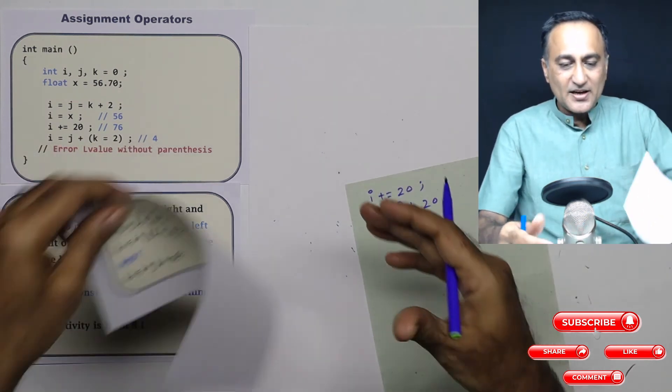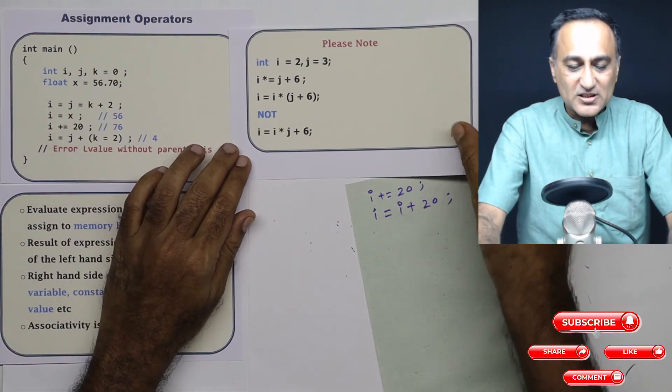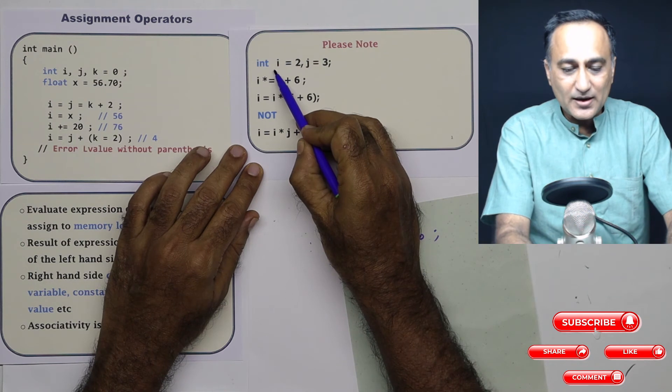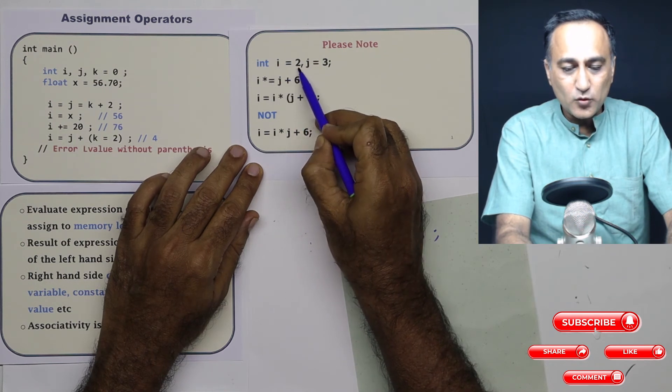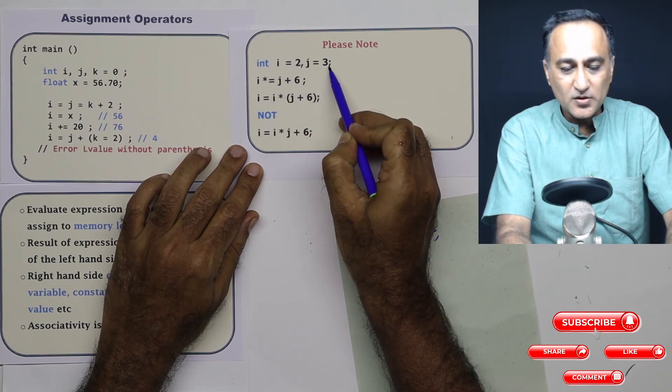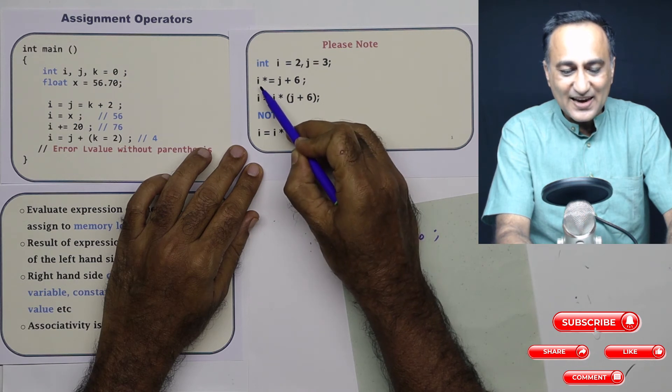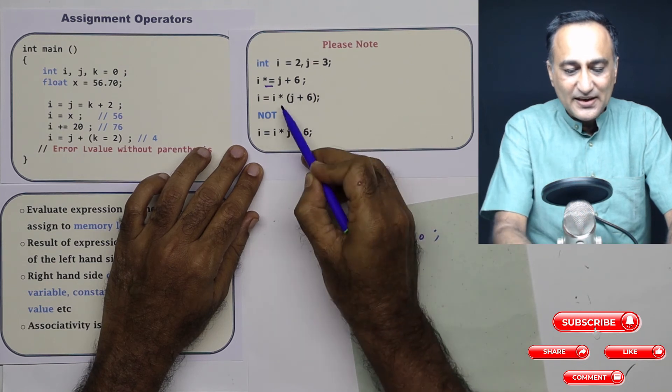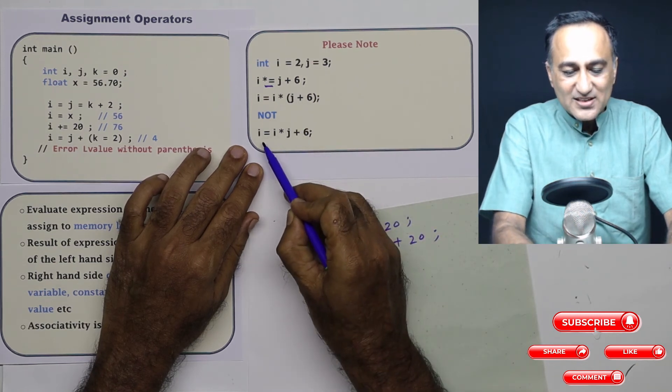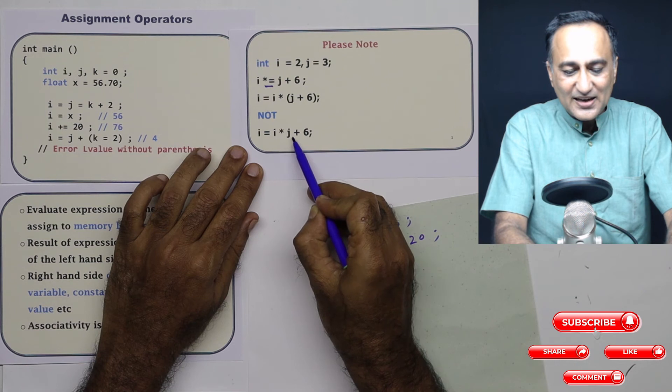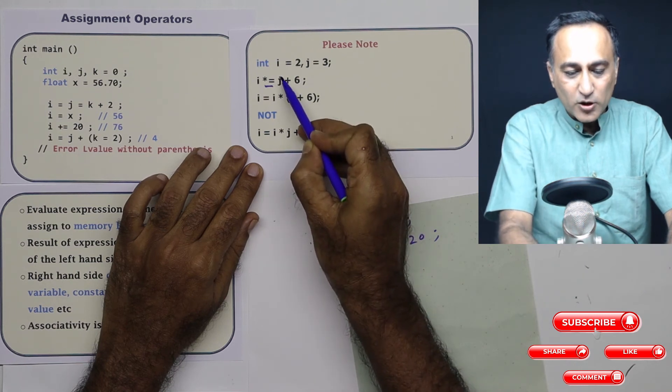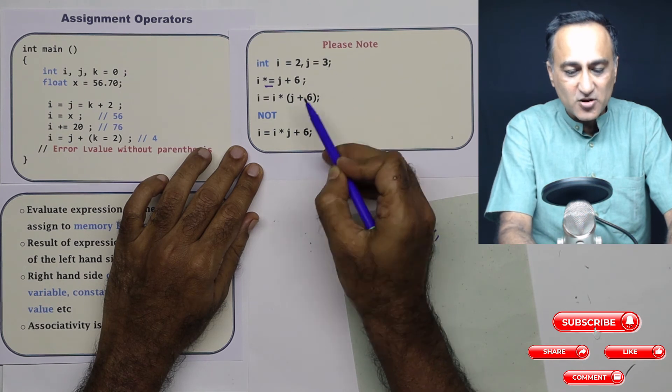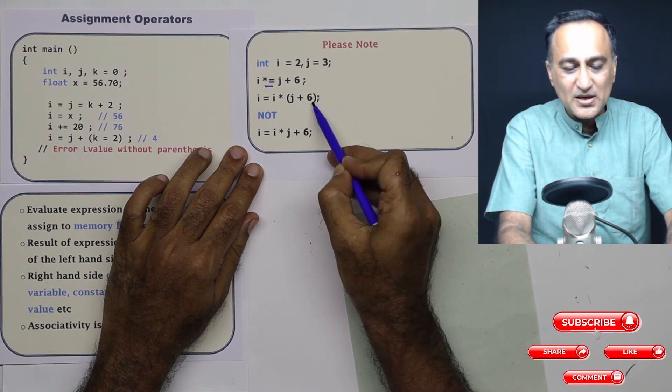Now you need to understand a few things about how expressions get evaluated when an assignment operator is there. Suppose I have declared int i equals 2, j equals 3. If I say i times equals j plus 6, using a shortcut assignment, it is not going to be i equals i into j plus 6. Whatever is on the right hand side, you can assume it as though it's in brackets. Suppose j is 3, 3 plus 6 happens to be 9.